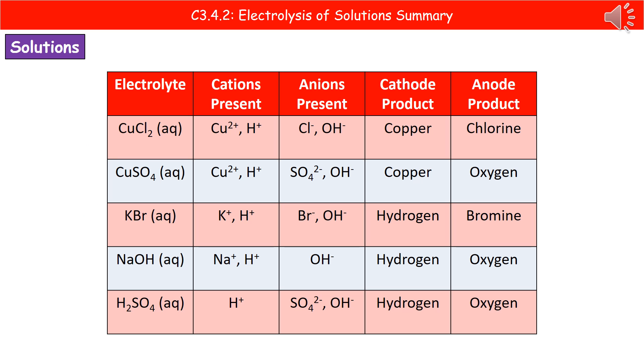To illustrate, here are five different electrolytes. Looking at the top line, we have copper chloride, CuCl2. The cations present are copper and hydrogen. From the reactivity series, copper is less reactive than hydrogen, so copper forms at the cathode. For the anions, we have chloride and hydroxide ions. Chlorine is in group seven, so chlorine forms at the anode.